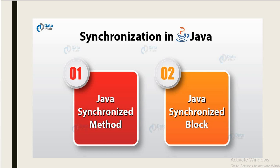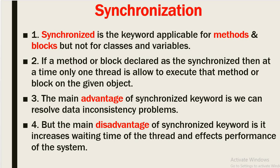We can declare only methods as synchronized or we can declare a synchronized block, but we cannot declare a variable as synchronized. Only two things we can declare as synchronized. Synchronization is a keyword applicable only for methods and blocks, but not for classes and variables. If a method or block is declared as synchronized, then at a time only one thread is allowed to execute that method or block on the given object.